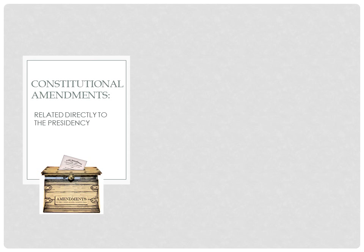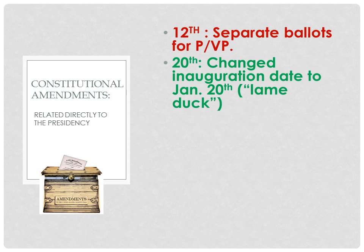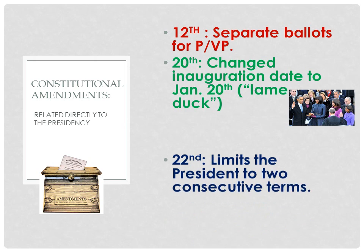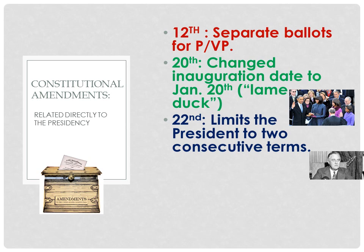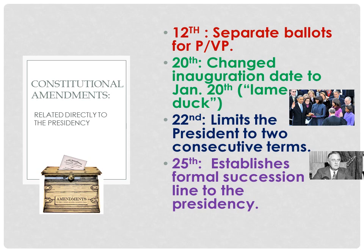As our republic has changed, the presidency has changed with it, and there are several constitutional amendments that AP government students should know that relate to the presidency. The 12th Amendment created a separate ballot for the Electoral College to vote for a president and a vice president, eliminating the situation in which the runner-up would become VP. The 20th Amendment changed the president's inauguration date from March to January 20th, getting rid of the lame-duck presidency effect. The 22nd Amendment now limits the president to only two consecutive four-year terms, or a maximum of ten years in office. The 25th Amendment establishes a formal succession line to the presidency if something should happen to the man in office.